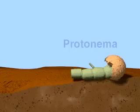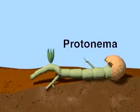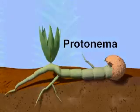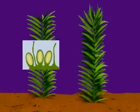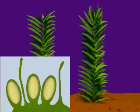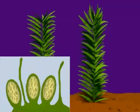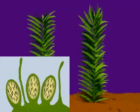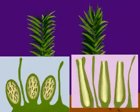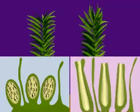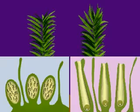A spore germinates to form a protonema. The antheridium develops on the male gametophyte, and sperm form within the antheridium. The archegonium develops on the female gametophyte, and an egg forms within the archegonium.